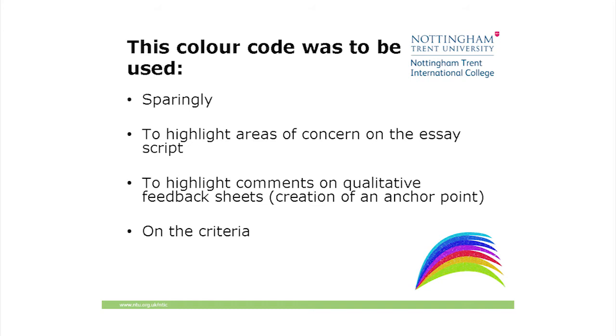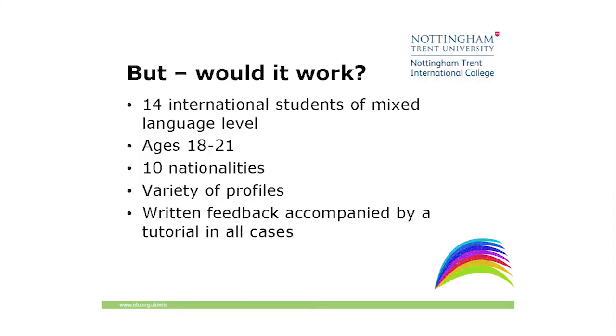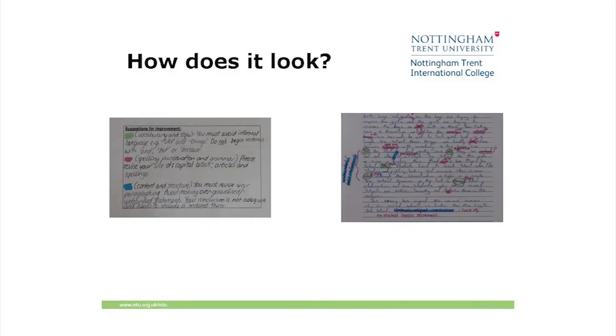I'm trying to create an anchor point for this all to come together. So I took 14 international students — just the size of my class — ages 18 to 21, 10 nationalities from a variety of continents, a variety of jagged profiles, probably between B1 to C1 on the Common European Framework, and always gave them tutorials. Here are my suggestions for improvement — for example, green, pink and blue. And here is an example of the student's essay I could give back. If it's blue on the qualitative feedback, it's blue on the other side.